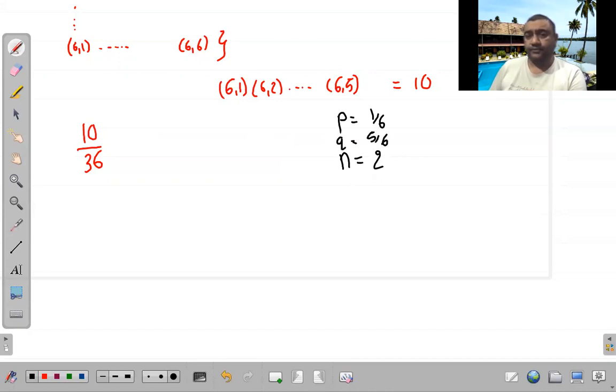Now I will think it like binomial. n c x p raise to x q raise to n minus x. This is the probability of random variable taking value x.